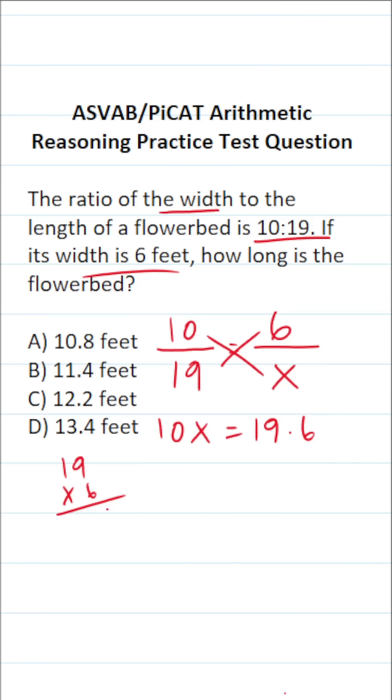9 times 6 is going to be 54. Bring down a 4, carry a 5. 1 times 6 is 6 plus 5 is 11. So this becomes 10X equals 114.